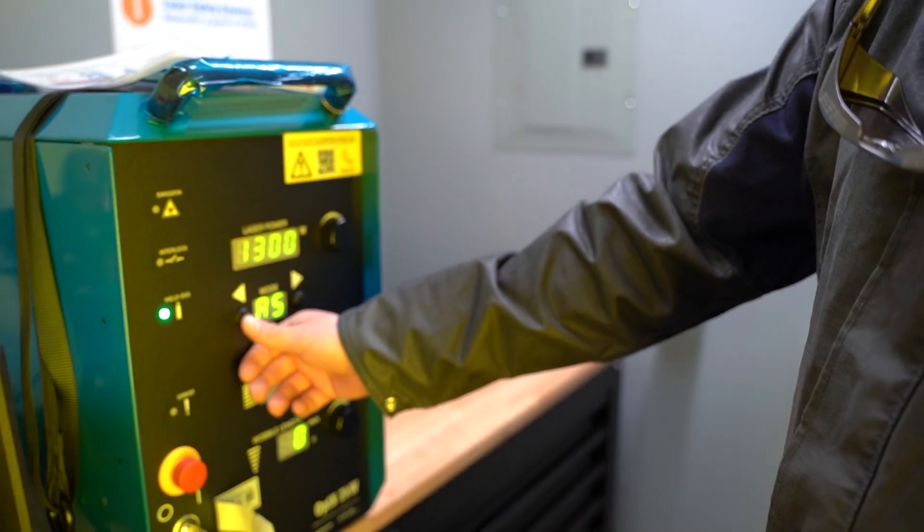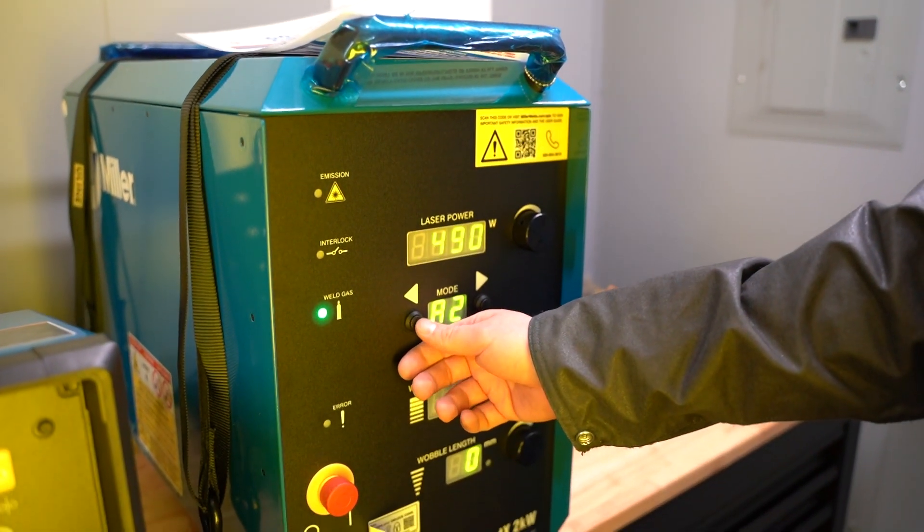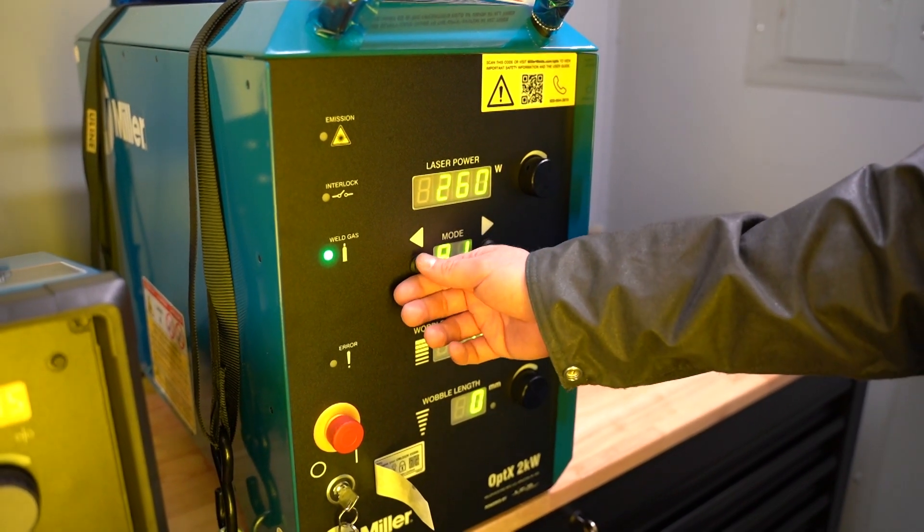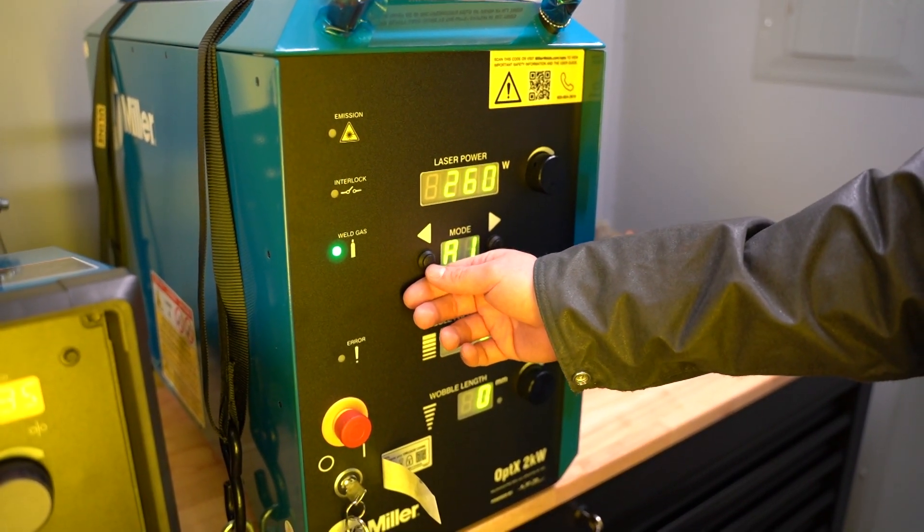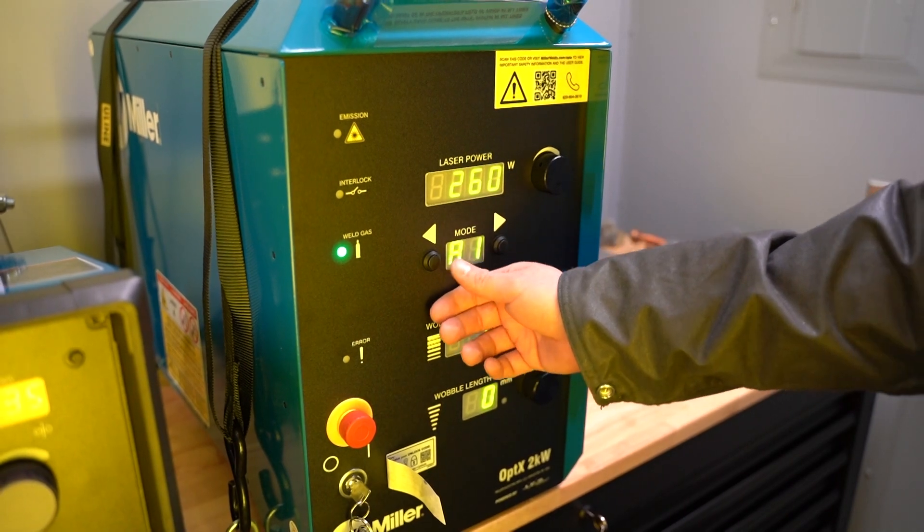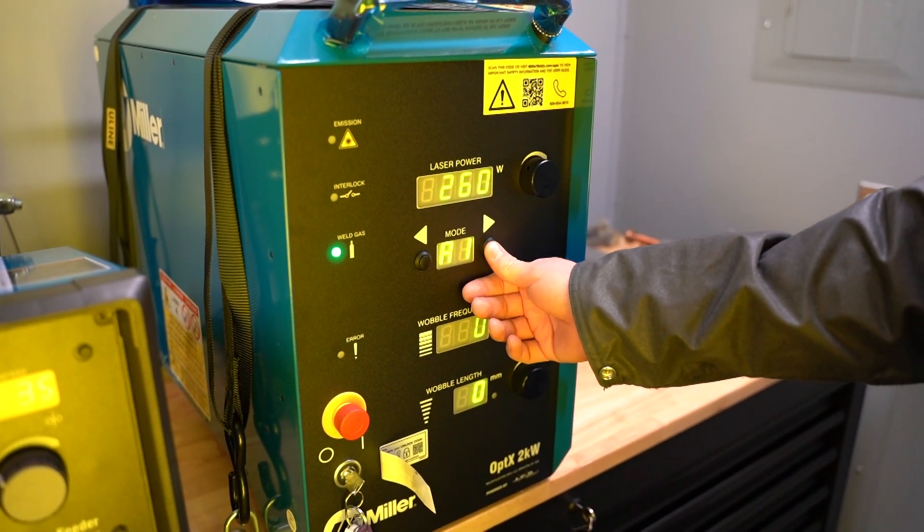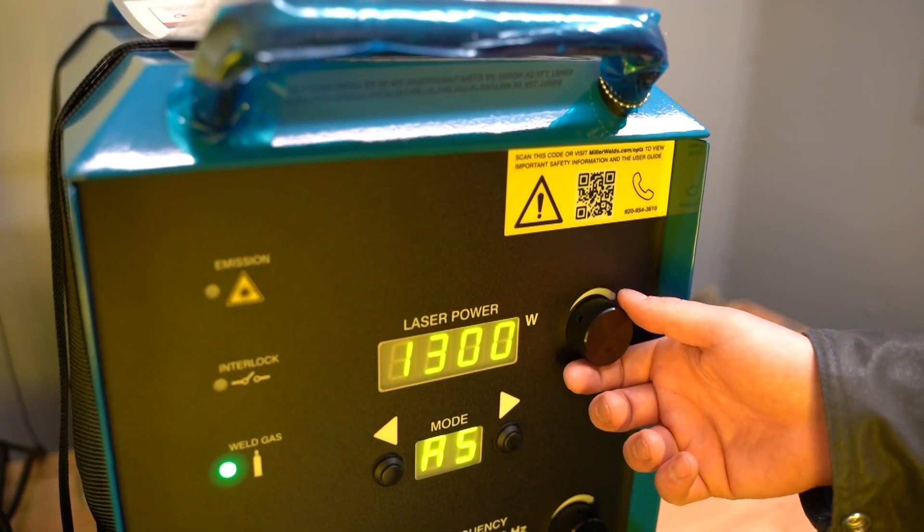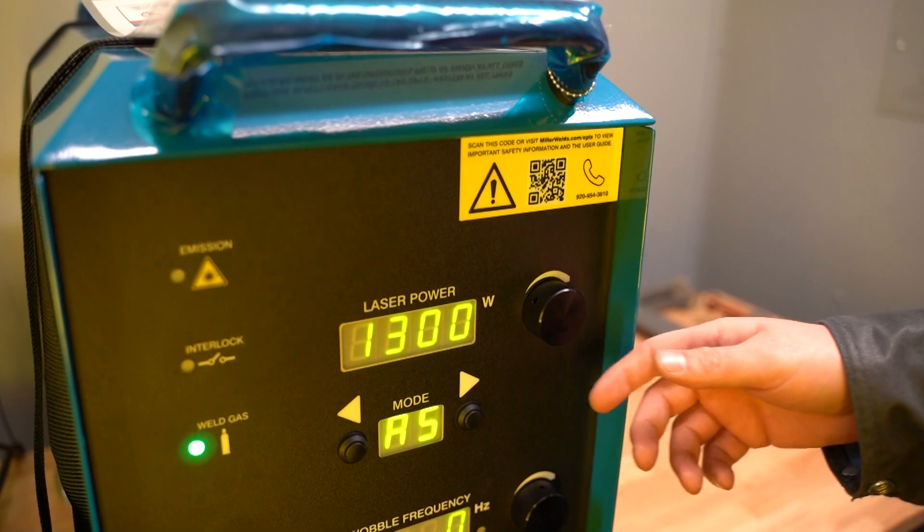We're also able to go over here and tack weld autogenously. It's basically got a spot timer in it. We're also able to move over and do laser cleaning as well. We're going to set in watts. It's a two kilowatt machine, so we can go from 200 watts to 2,000 watts.